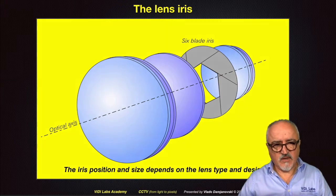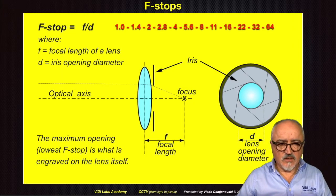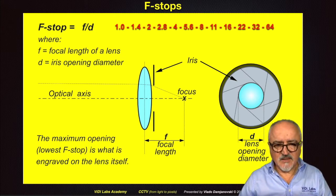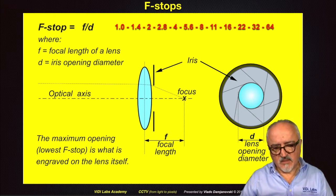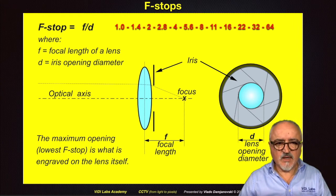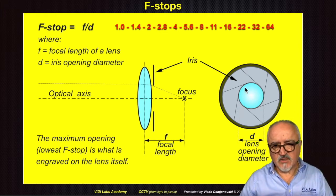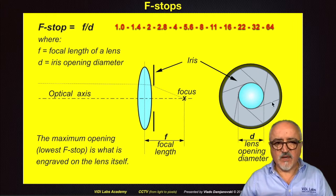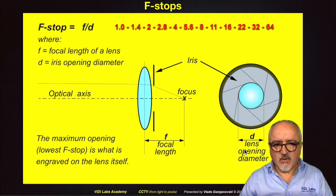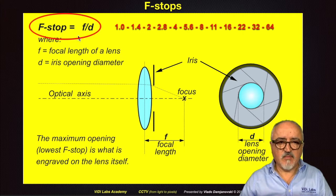So how is f-stop defined? In this drawing we illustrate this by showing a simple convex lens with only one optical element. If we put the iris blades — in this case shown as a six-blade iris — somewhere behind the lens, the amount of light that will get through that lens will be only in the middle section where this iris lets the light go through. If we now measure that diameter — the lens opening diameter D — then the f-stop of that particular opening for that particular lens with the known focal length is defined as focal length divided by the diameter of the iris opening.